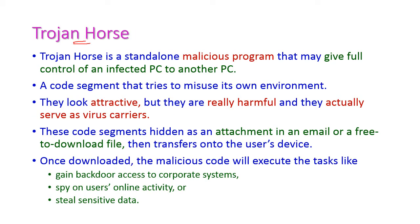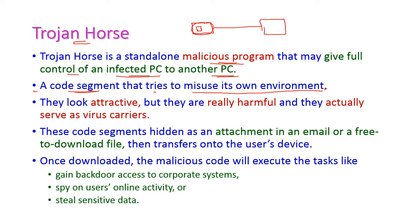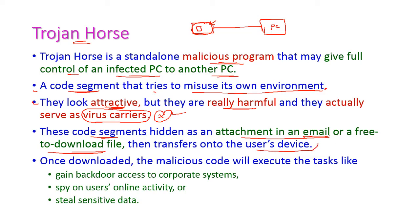The first one is the Trojan horse. It is a malicious program that may give full control of an infected PC to another PC. The Trojan horse is a code segment that tries to misuse its own environment. Once the Trojan horse enters our system, the full control of that PC will be taken by the other PC. These malicious programs actually look very attractive but are very harmful and serve as virus carriers. The Trojan horse code segments are hidden as attachments of emails, free-to-download files, and are transferred to users' devices.